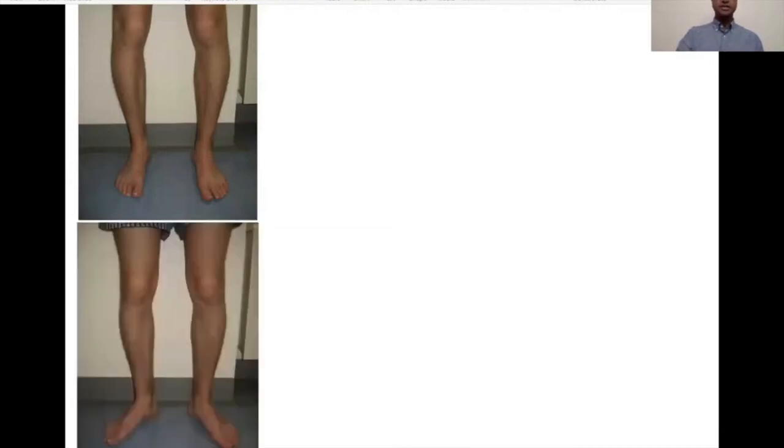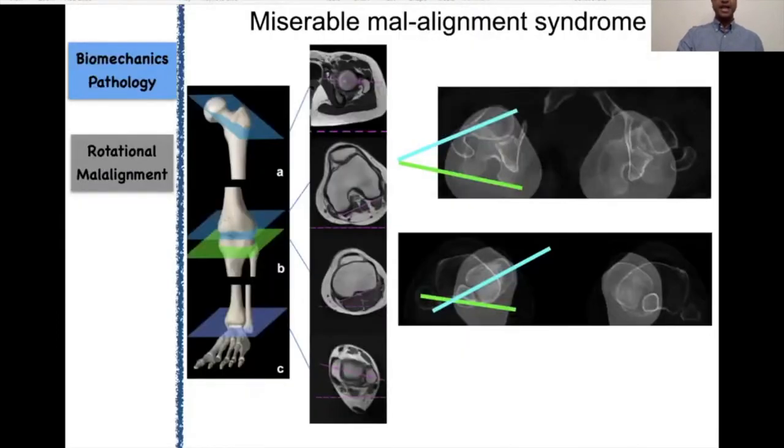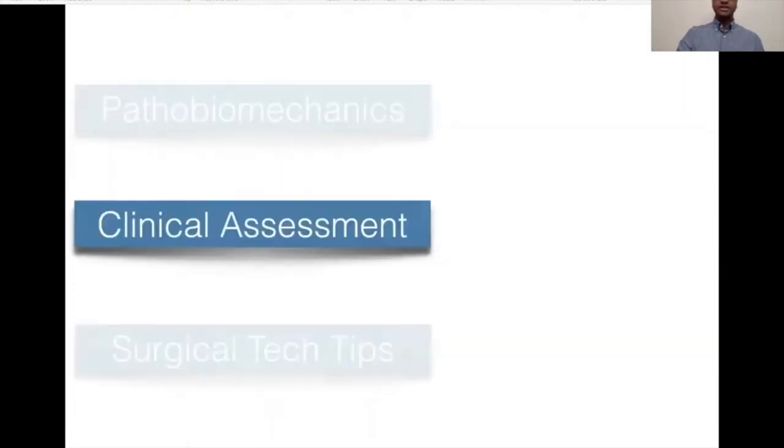If there is torsional abnormality, the first clue on clinical assessment is squinting patellae, where the patella is inwardly pointed. If you ask the patient to stand with the patella facing forward, you will see external rotation deformity of both lower limbs. This needs to be further assessed with a rotational profile and can also be checked on imaging with superimposed images.